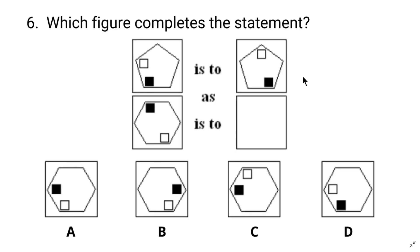Now we are going to solve another type of abstract reasoning problem: which figure completes the statement? This image can be converted into another one — we need to find what image we get after converting the given one. When this image is converted, the white square has moved in a clockwise direction and the black square has moved in a counterclockwise direction. Similarly, this white square should move clockwise and the black square counterclockwise. So the answer is clearly A.